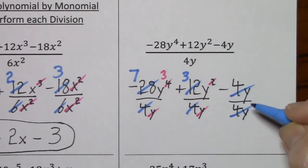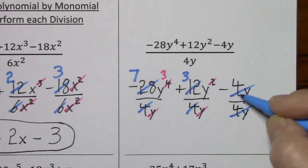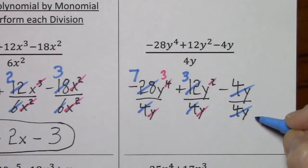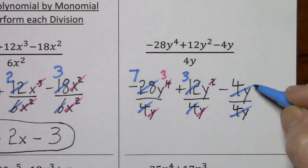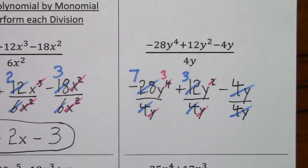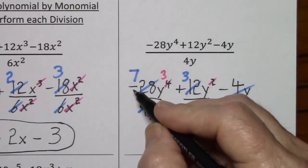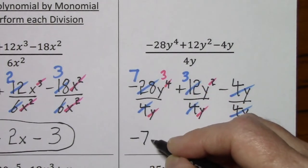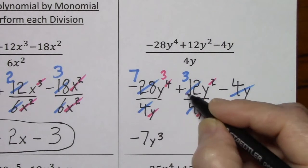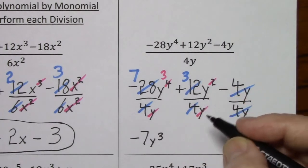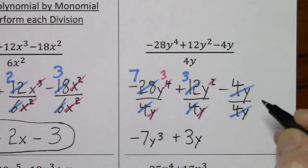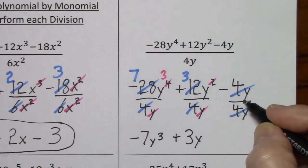4y cancels out 4y — this doesn't go away. You divide by 4y and divide by 4y, you get 1 over 1, so it's going to be minus 1 at the end. So now we'll see what's left standing: negative 7y to the 3rd, positive 3y to the 1st, and again this last term is a negative 1.